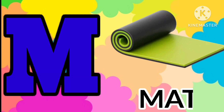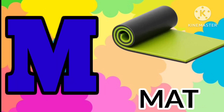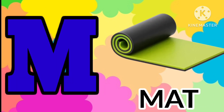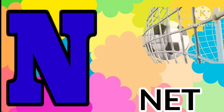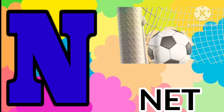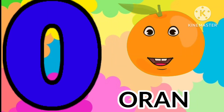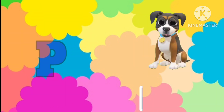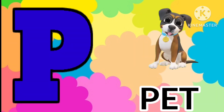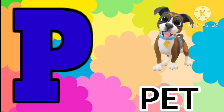M is for mat, m-m-mat. N is for net, n-n-net. O is for orange, o-o-orange. P is for pet, p-p-pet.